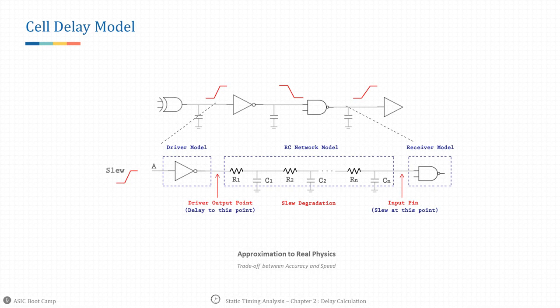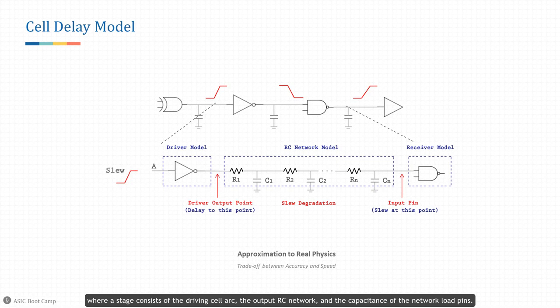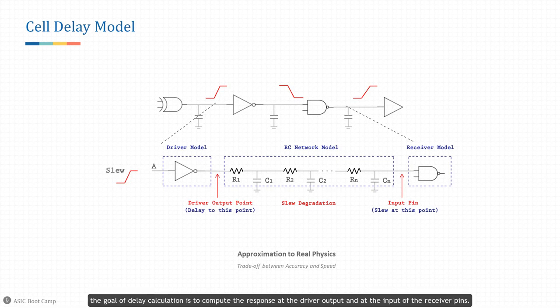Cell delay model: delay calculation is performed one stage at a time, where a stage consists of the driving cell arc, the output RC network, and the capacitance of the network load pins. Given an input slew or waveform at the driver input, the goal of delay calculation is to compute the response at the driver output and at the input of the receiver pins. The computed responses are then used to determine the cell delay for the driver and the input transition time at the load pins.